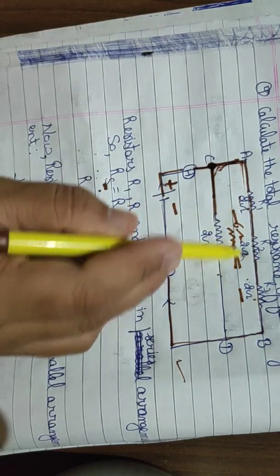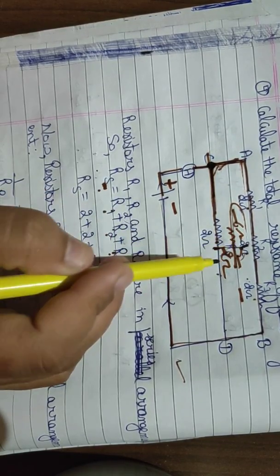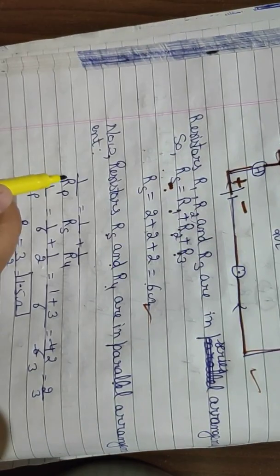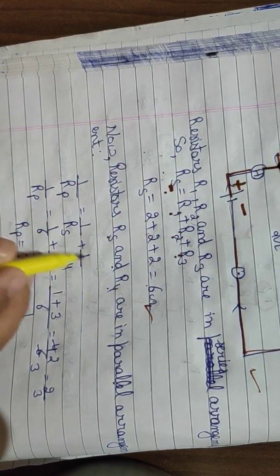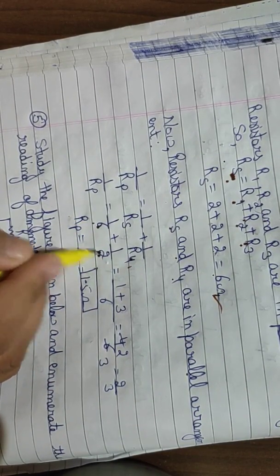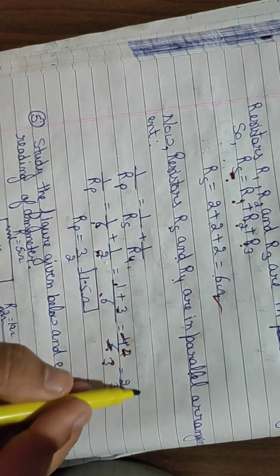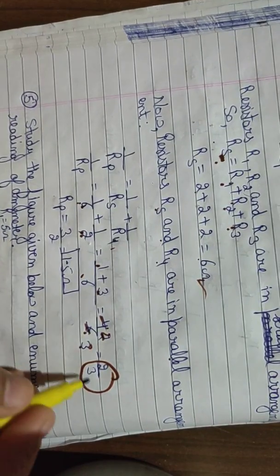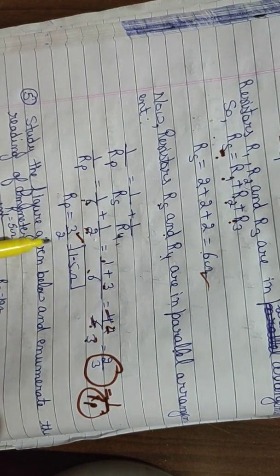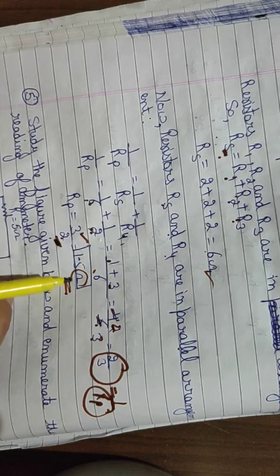From here, two paths emerge: going up gives the 6 ohm equivalent resistor, and the other path gives R4 = 2 ohm resistor. So now these two are in parallel. For registers Rs and R4 in parallel: 1/Rp = 1/Rs + 1/R4 = 1/6 + 1/2. LCM of 6: = 1/6 + 3/6 = 4/6 = 2/3. So Rp = 3/2 = 1.5 ohm. Ohm is the SI unit of resistance.